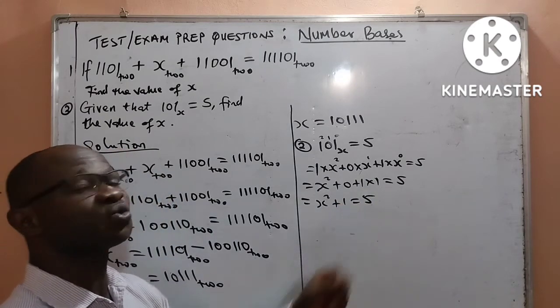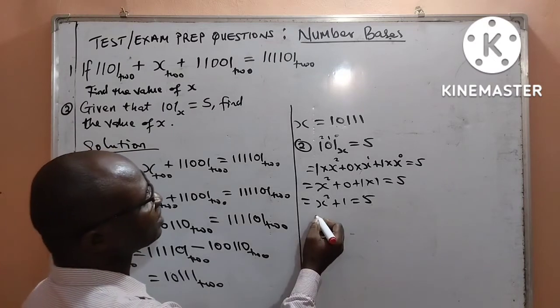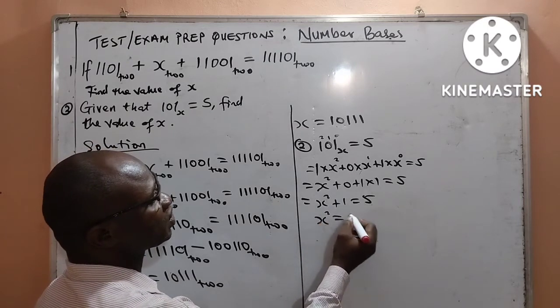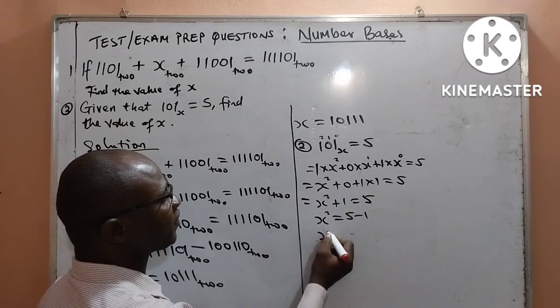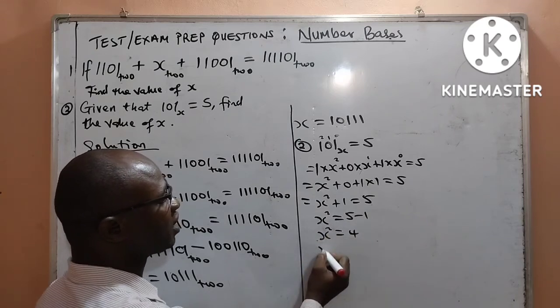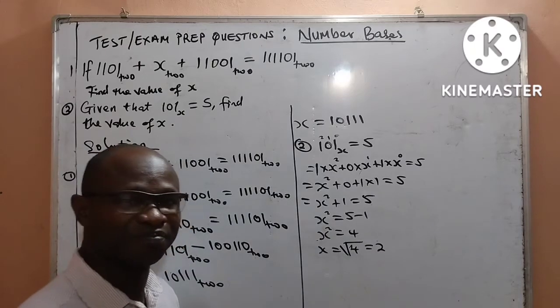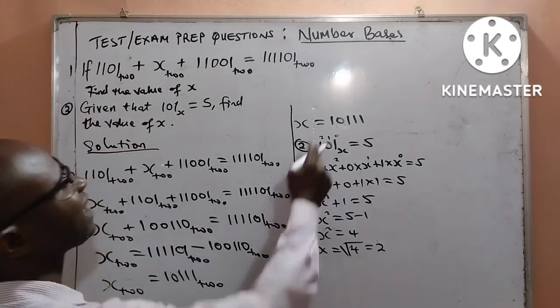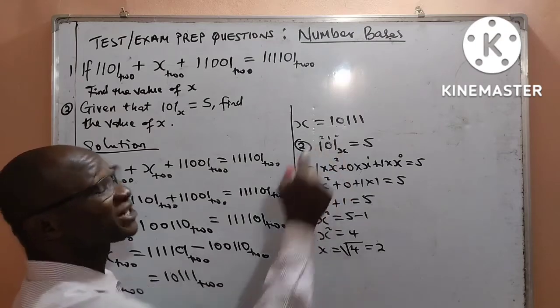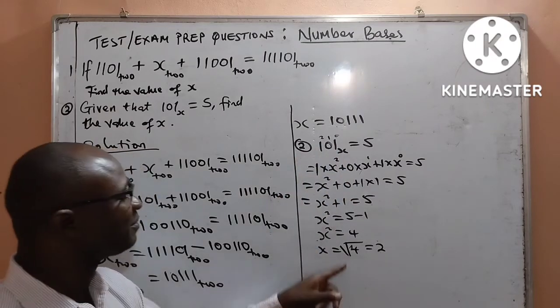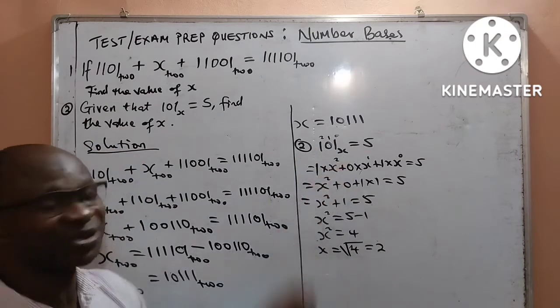Finally, I can now move this one to the right-hand side to get x squared is equal to 5 minus 1. Therefore, x squared is equal to 4, meaning that the value of x is square root of 2. Beautiful. Therefore, we can conclude that 101 is actually in base 2 because the value of x is 2.